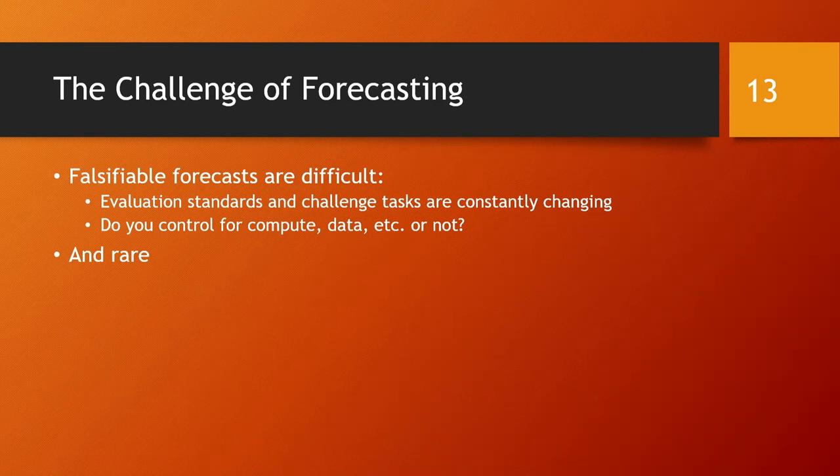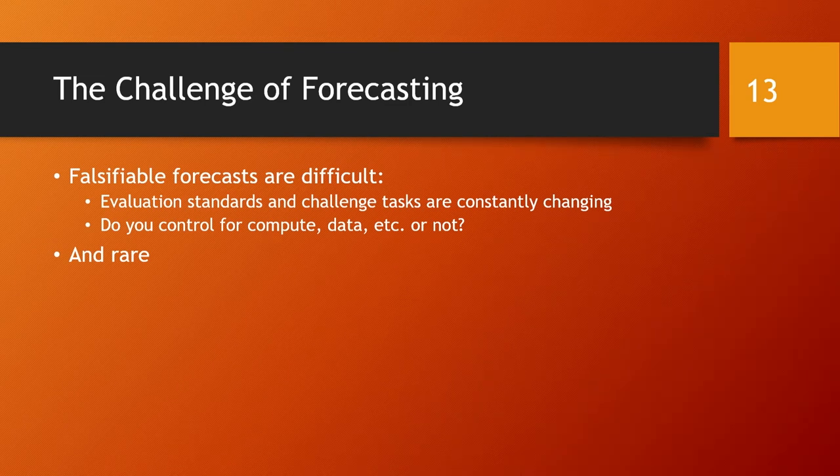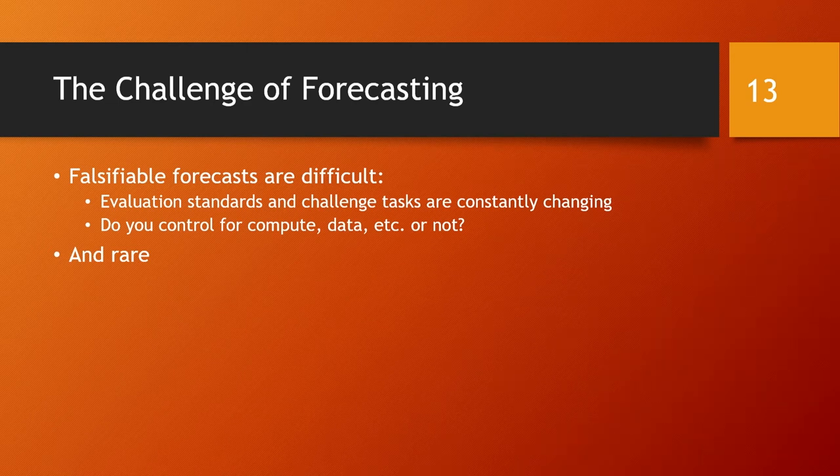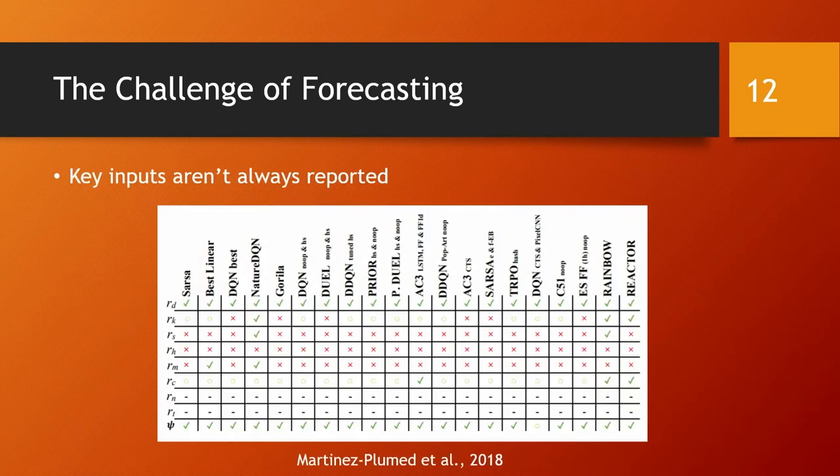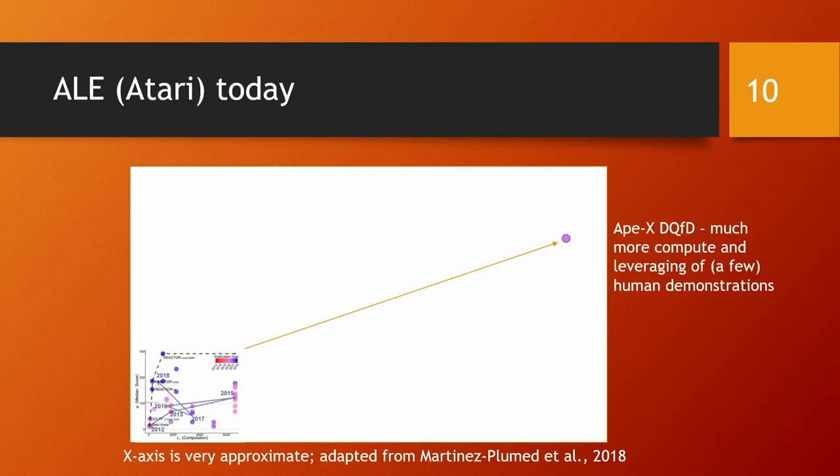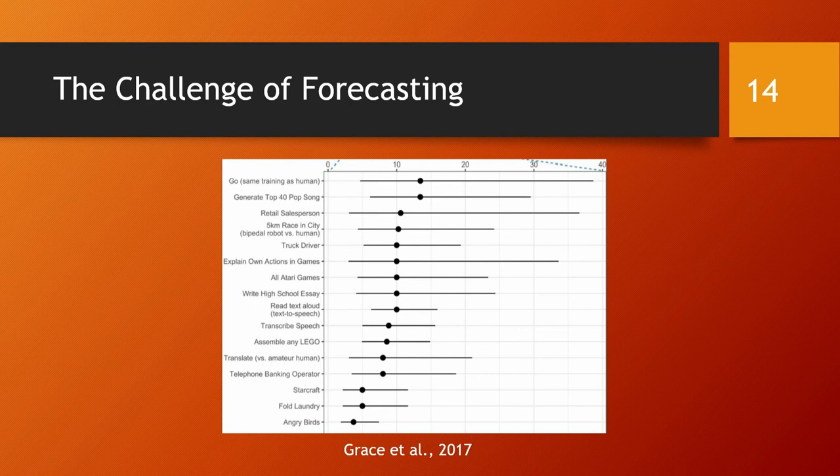Another problem is that it's hard to make forecasts in AI because the benchmarks are constantly changing. People rarely evaluate on really old challenges that are basically solved because you don't learn anything interesting. And they don't try future challenges that are just intractable because they'll get a horrible score. So there's constantly changing standards. And there's a question of do you control for compute data, etc. These are expert opinions on a bunch of different tasks from a paper by Grace et al. It's really all over the place in terms of how soon people think that you'll be able to automate a retail salesperson or translate at a superhuman level or beat Starcraft. These are over decades that expert opinion varies.